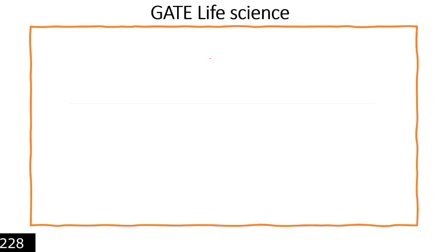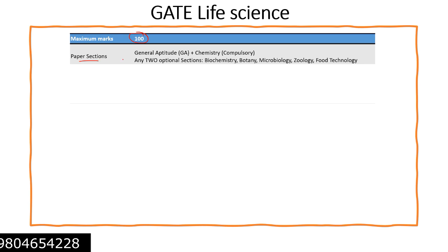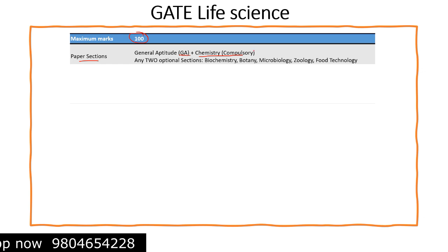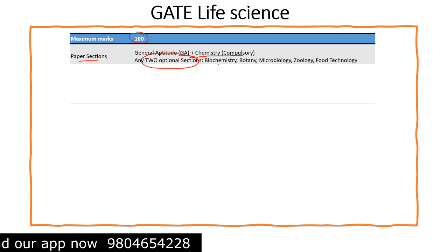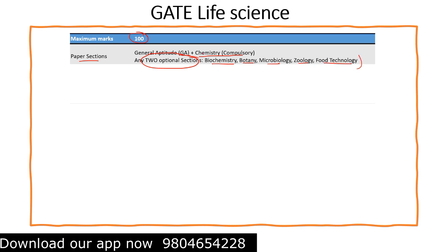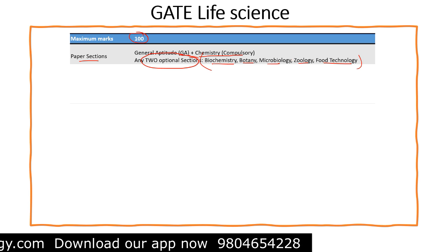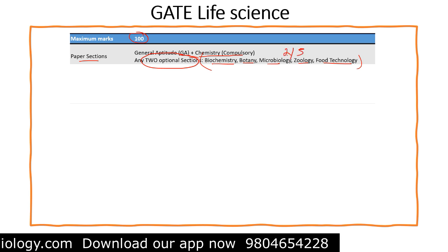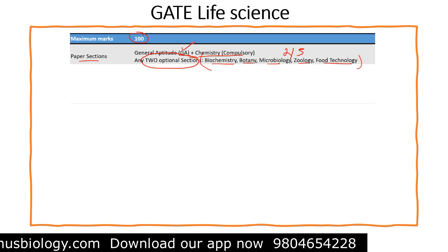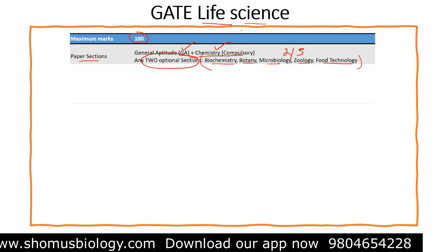The maximum marks for this exam is 100. The paper has a general aptitude section and a chemistry section, both of which are compulsory. Apart from that, you can choose any two optional sections from biochemistry, botany, microbiology, zoology, and food technology. General aptitude and chemistry are compulsory, so your plus-two chemistry must be strong.